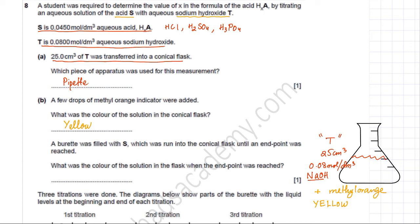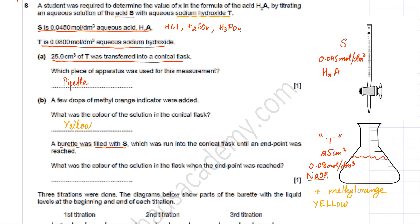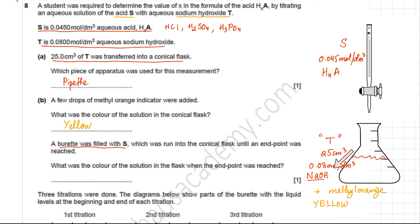Next, a burette was filled with solution S and run into the conical flask until the endpoint was reached. So the burette contains the acid S — 0.045 mol per dm³ of HXA — with X still unknown. This is an acid-alkali reaction: acid is added from the burette until all the NaOH in the conical flask is neutralized.